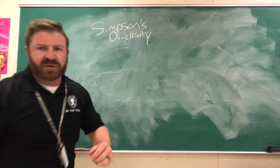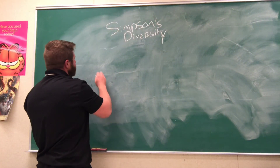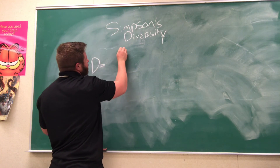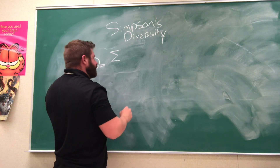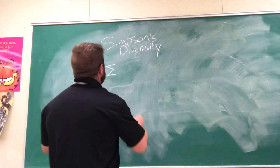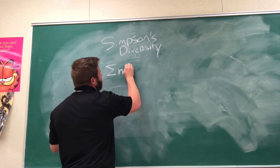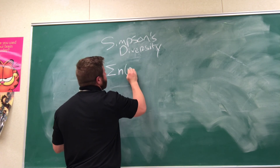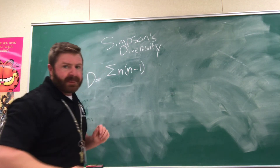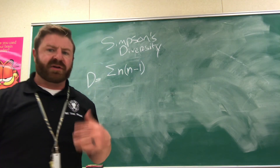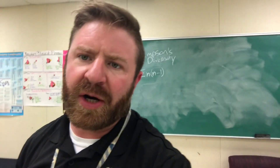The formula is pretty simple. Diversity equals sigma — that is, the sum of — lowercase n times lowercase n minus 1. The lowercase n is going to be how many of a particular car you counted. We're going to do this in a parking lot. So let's say I counted five Toyotas — that would be the lowercase n for Toyota.